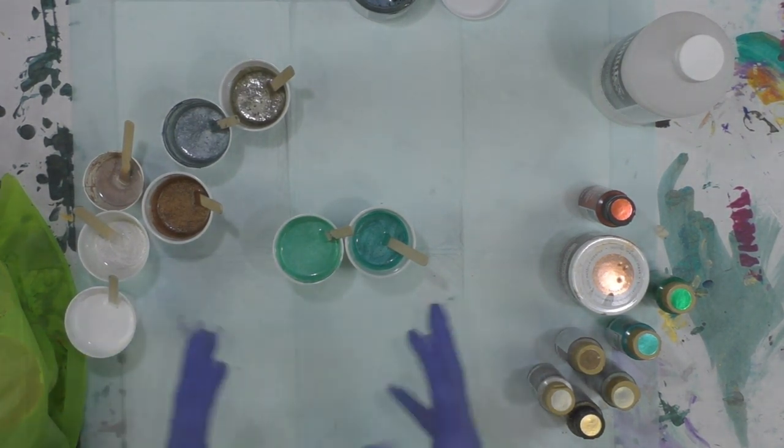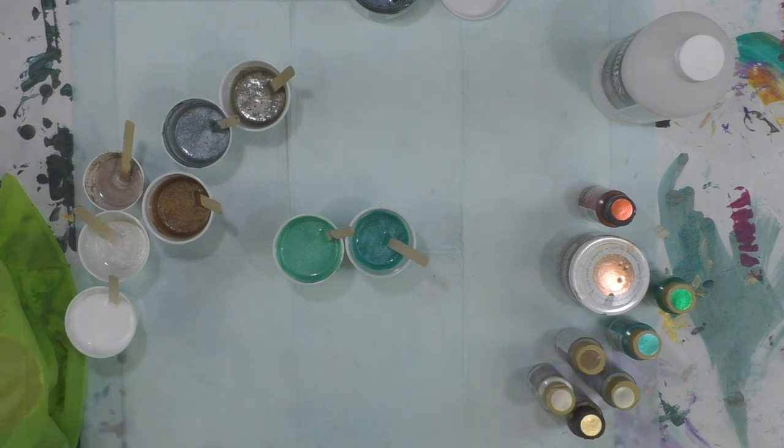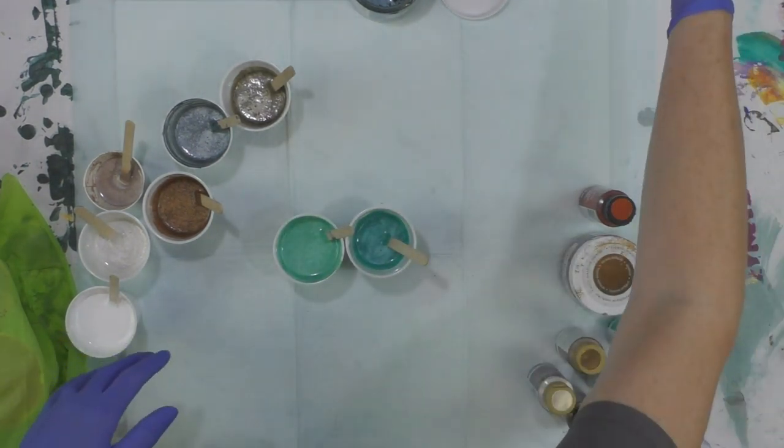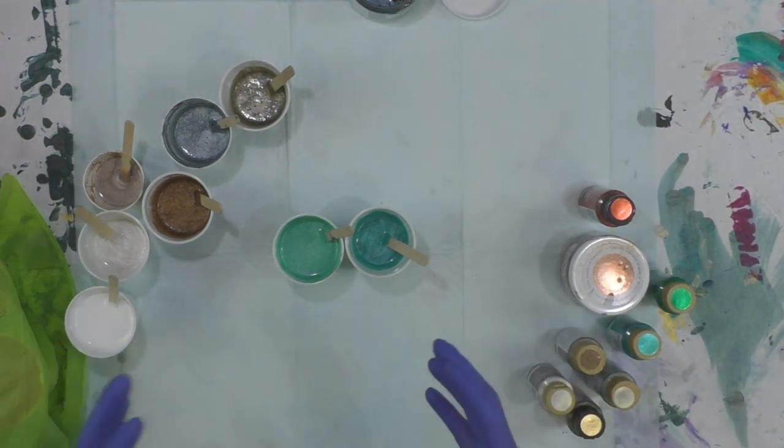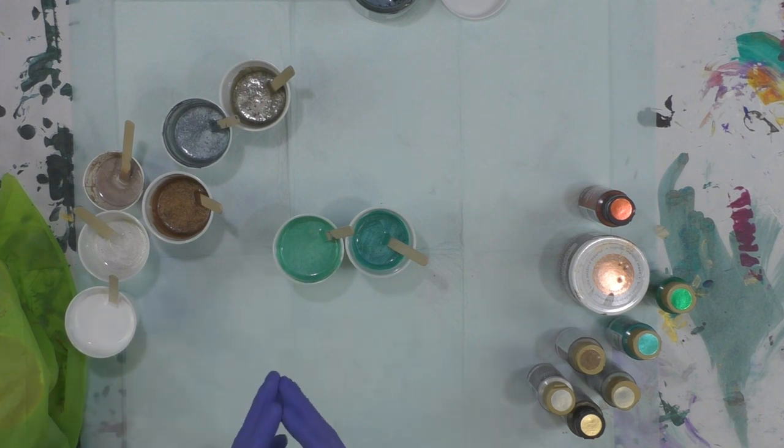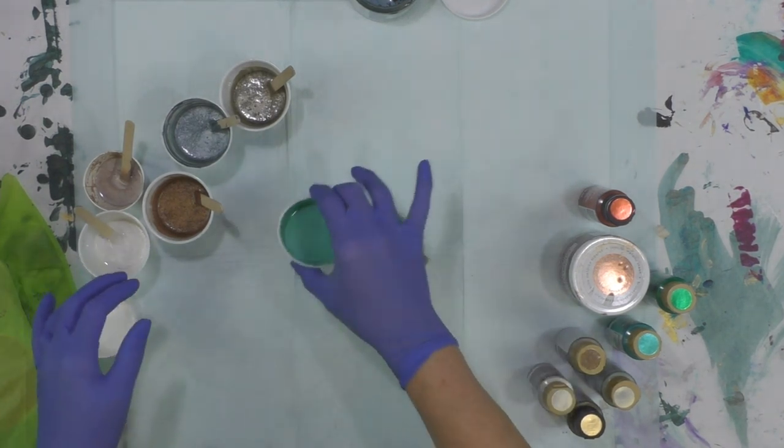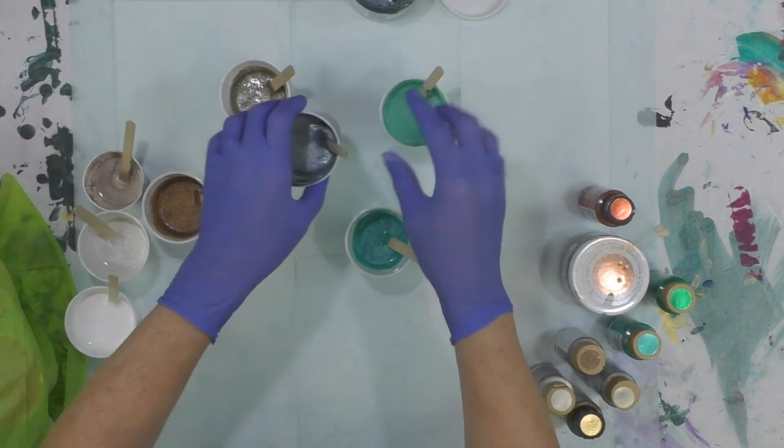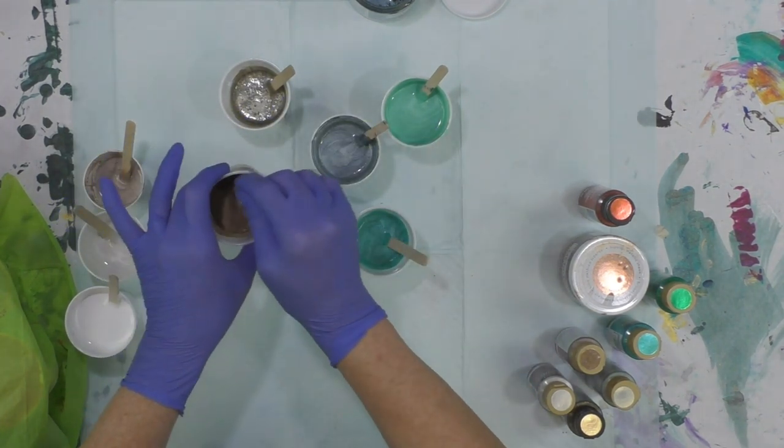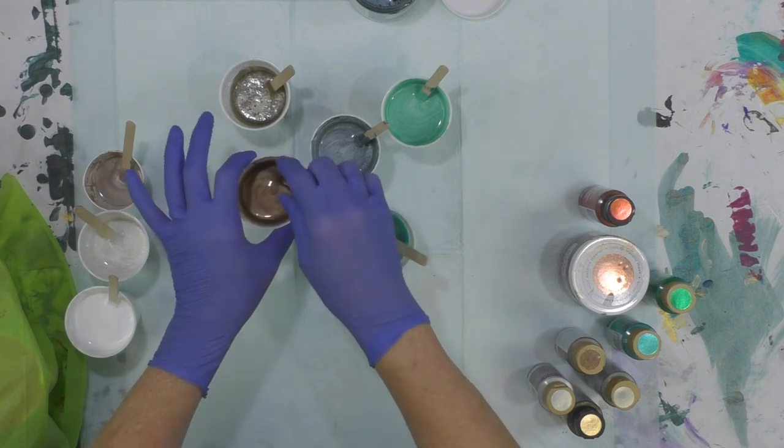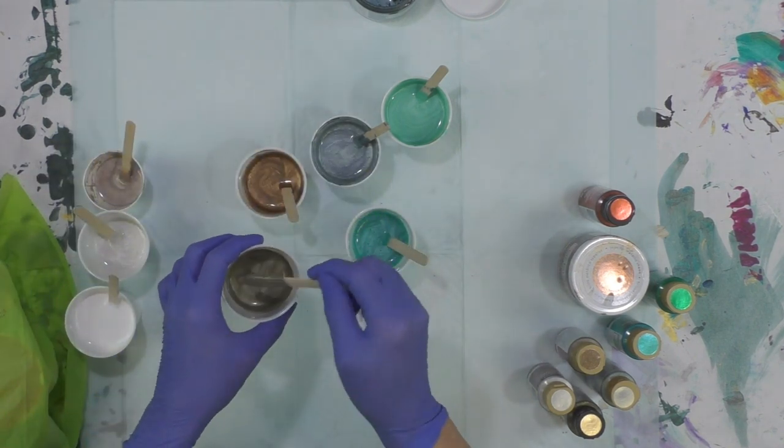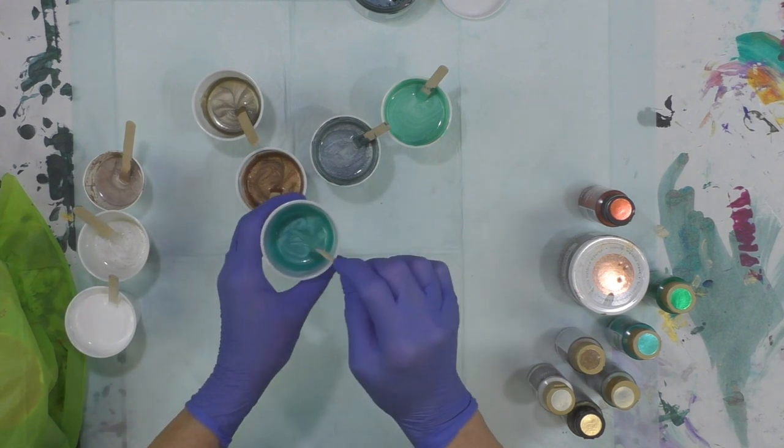I used Liquitex pouring medium. That's what Mellie Dee uses. I just added in my five ounce cups maybe a tablespoon or two of Liquitex pouring medium to the five ounce cup, mixed it in, and then added water to get it to the consistency that I needed. I want it pretty fluid because I am going to do a puddle pour. In the smaller cups I might have added only a teaspoon or so of Liquitex pouring medium and then water.